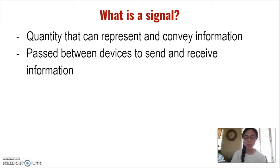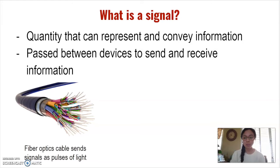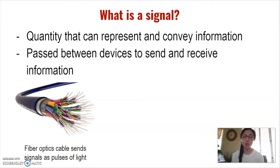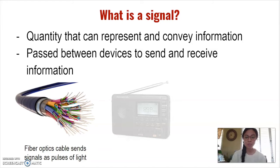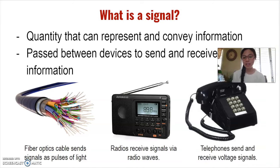Here are some examples of ways signals can travel. One example is fiber optics — fiber optic cables are commonly known for carrying signals to your TV by sending information coded in a beam of light down a glass or plastic pipe. Another example is the radio, which receives signals via radio waves. Finally, we have the telephone; the signals sent and received by phones are voltage signals.